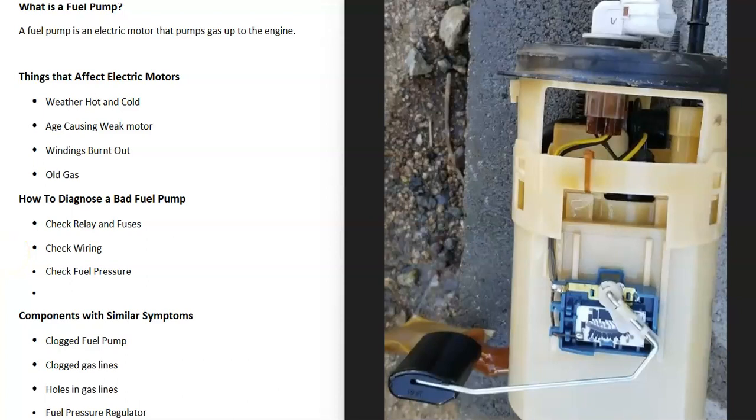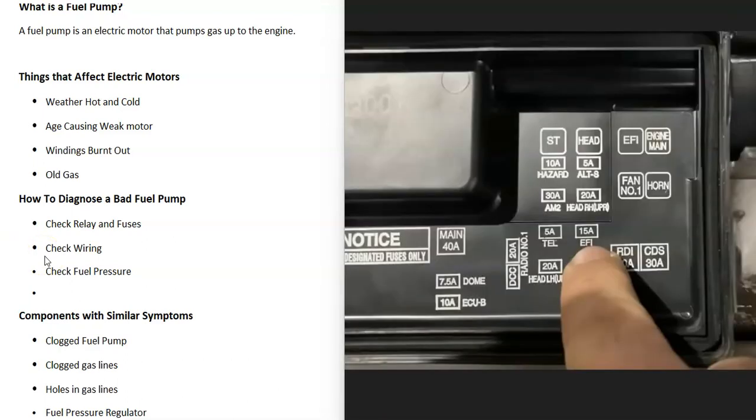How do you go about diagnosing if you have a bad fuel pump? The first thing to do is check all your relays and fuses and be sure they haven't blown out, because that's a common problem. You might have a blown fuse or a bad relay, so definitely go check those out.